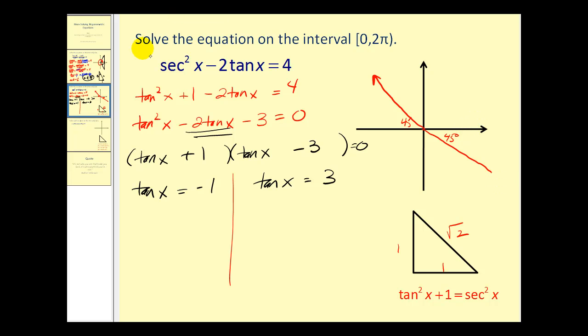So here x could equal 90 plus 45, or 135 degrees, or three pi over four radians. Or 315 degrees, which would be seven pi over four. Okay, for tan x equals three, we're going to have to use our calculators because this has not come out to a nice reference angle.